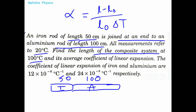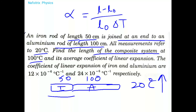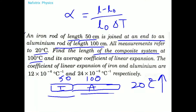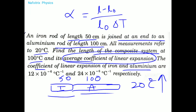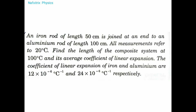We need to find the length of the composite system at 100 degrees centigrade. When the temperature is raised from 20°C to 100°C, both the iron rod and the aluminium rod will expand. The coefficients of linear expansion for iron and aluminium are given separately, which is why average coefficient of linear expansion is used.